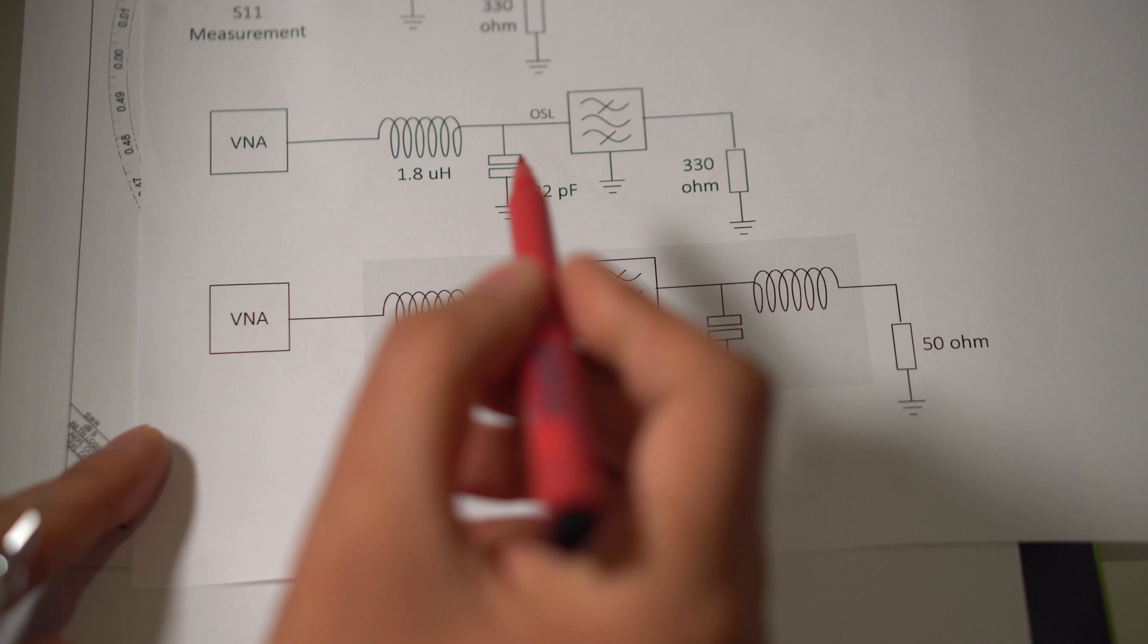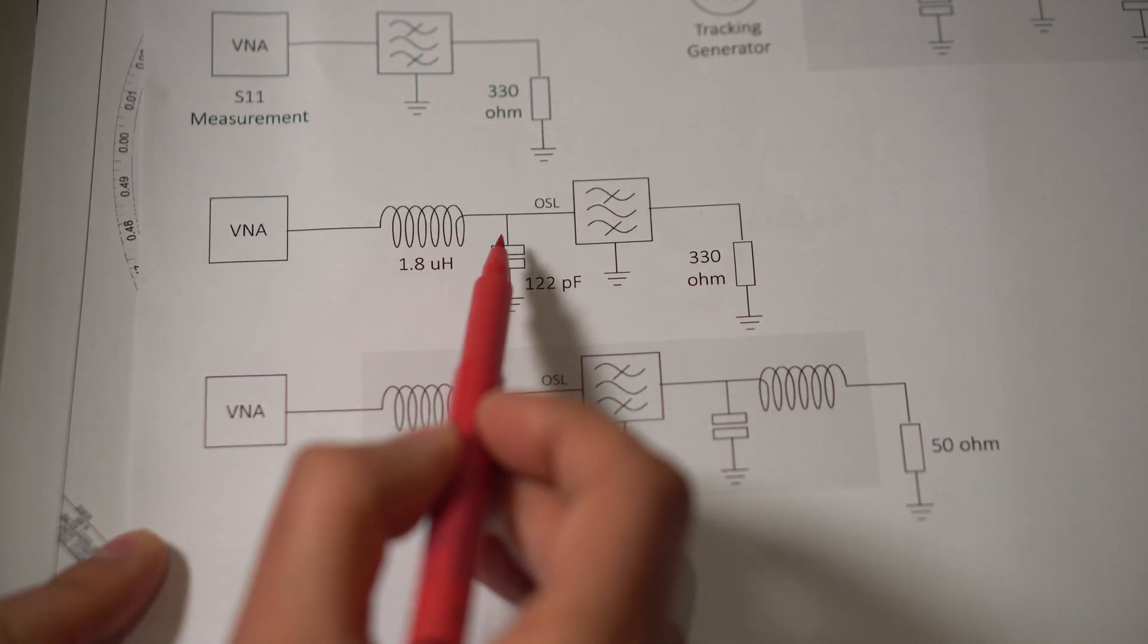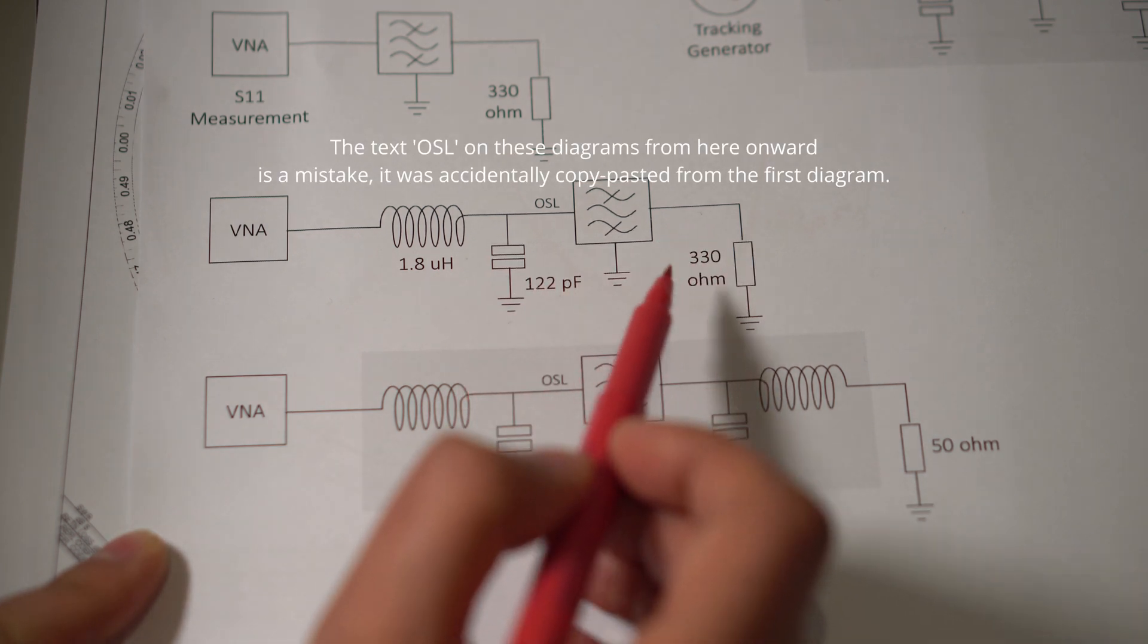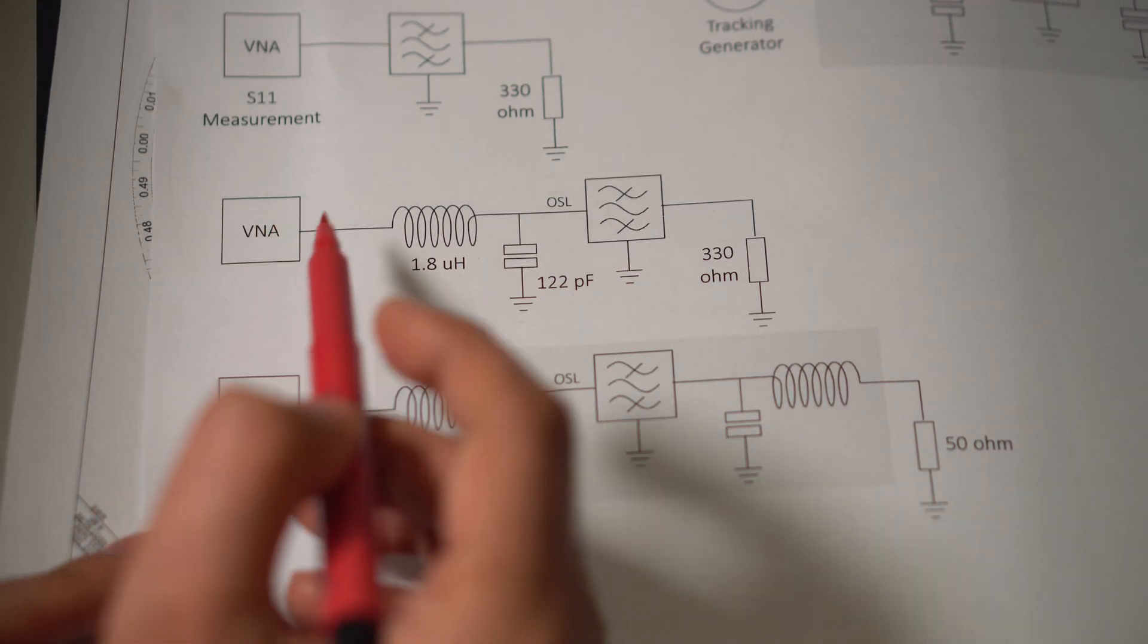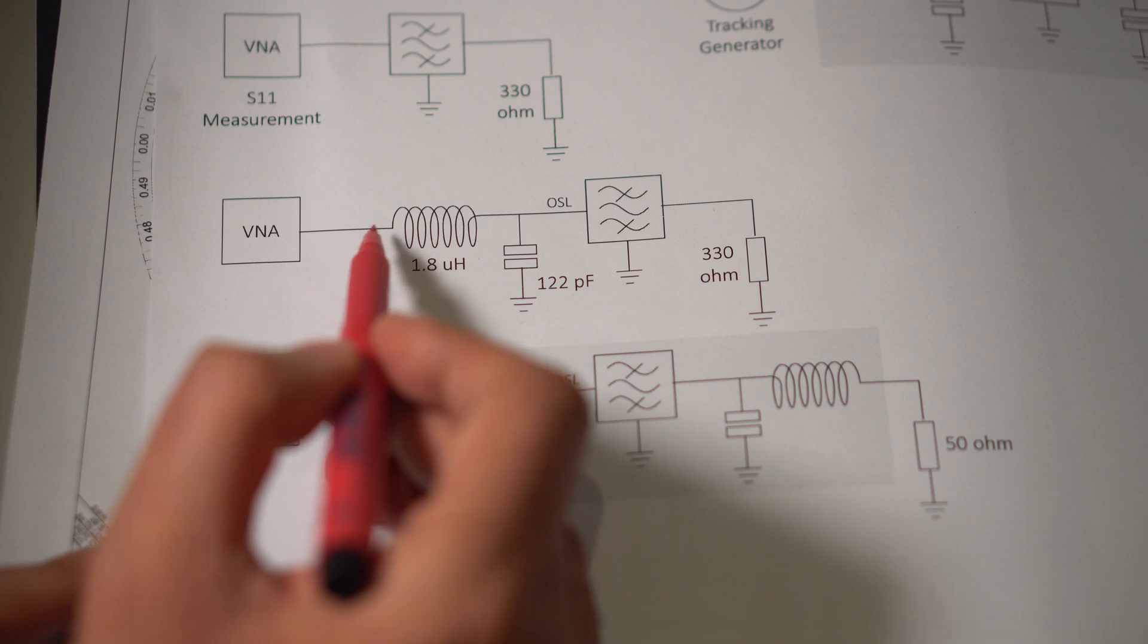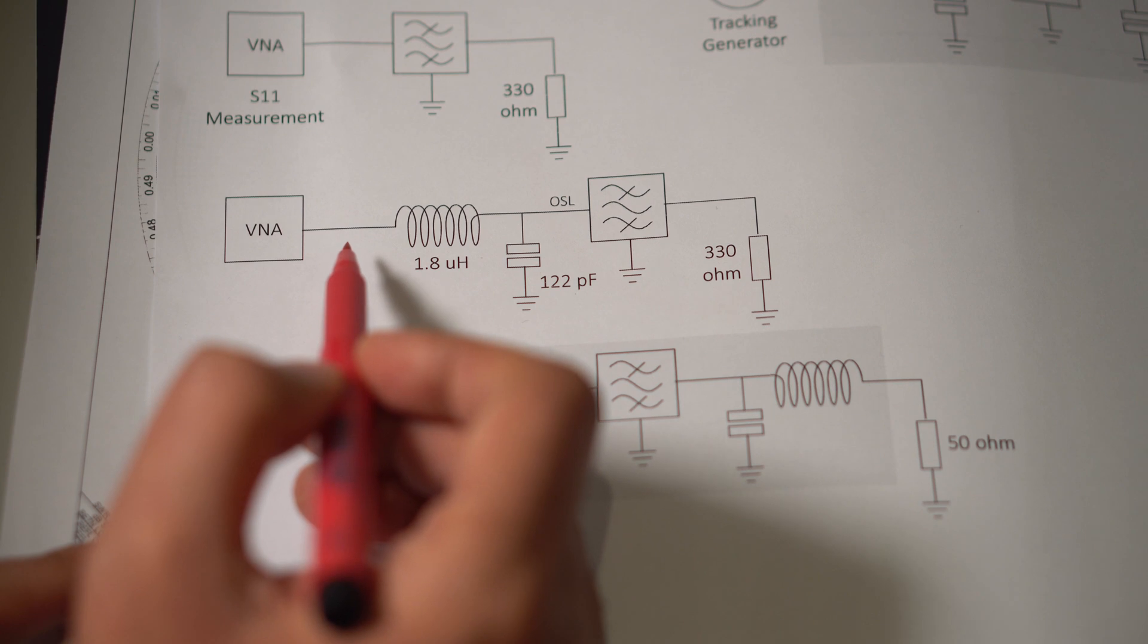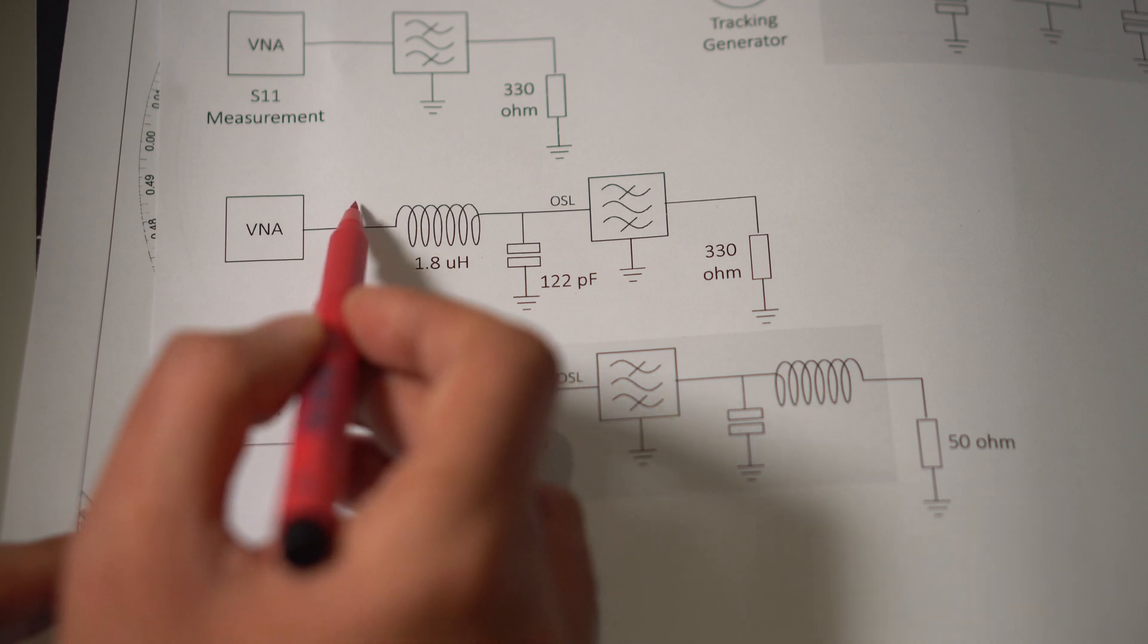And so that then meant that I had the VNA. And I had the 1.8 micro-Henrys and the 122 pF. And the output was still terminated with 330 ohms. And this then allowed the VNA. By the way, this measurement is called an S11 measurement because this happens to be port 1 of the VNA. And we're only measuring port 1. We're not using the port 2 for this measurement. And so from here, I was able to see the 50 ohms input impedance now at this point.